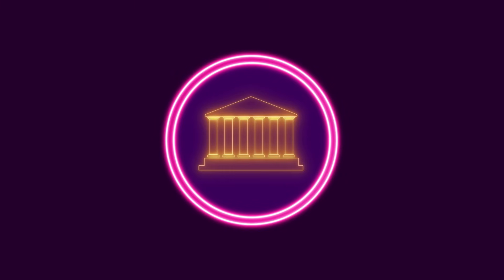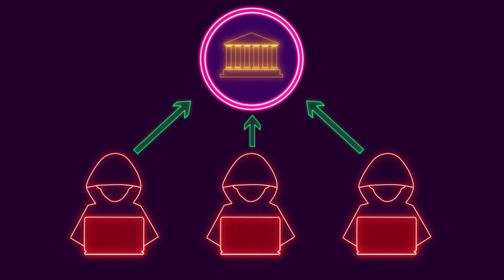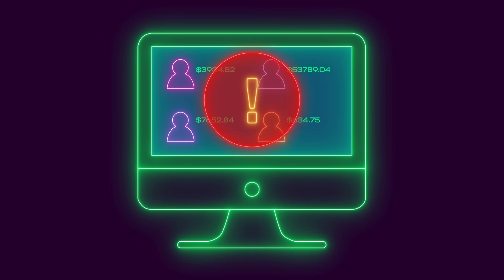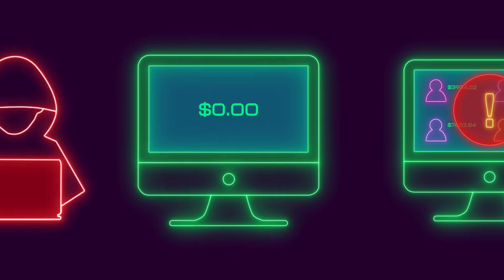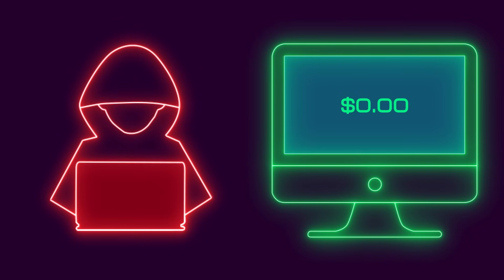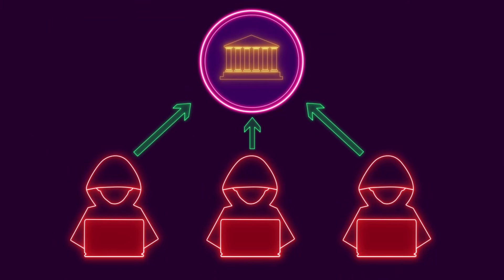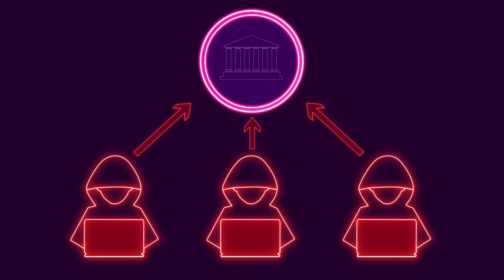Think of an online bank. If someone can get access to the bank's API and retrieve all of their customers' account balances, that would be a huge breach. And if they can access the API and change their own balance to millions of dollars, that would also be a major problem. Of course, they could also overwhelm that API endpoint, making it unavailable for anyone to use.